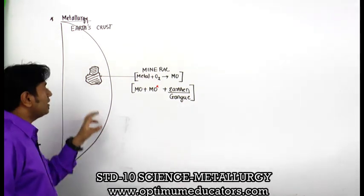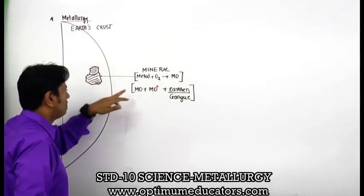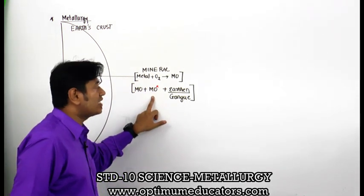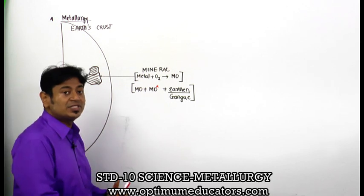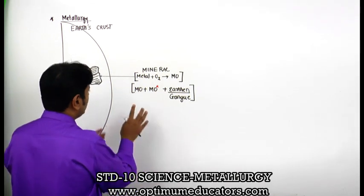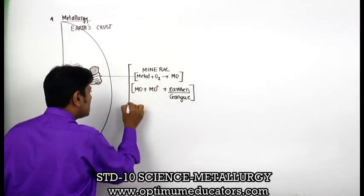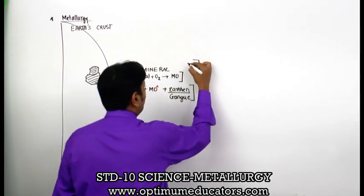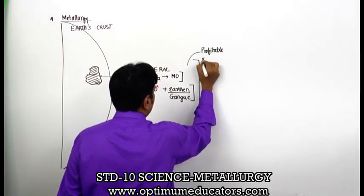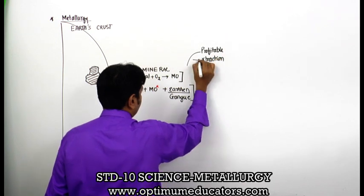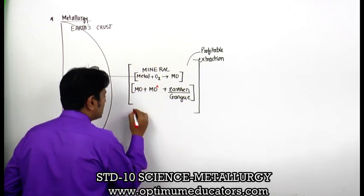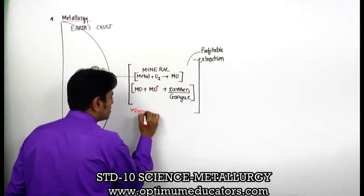Mining activity is done here, and inside it there is a metal, but in combined form - it is combined with oxygen. With it there can also be other metal oxides, plus earthen materials like sand, soil, rocky materials - that is known as gang. So, this thing is your mineral. But if I do profitable extraction from it, then I get something known as a new term - mineral ore.